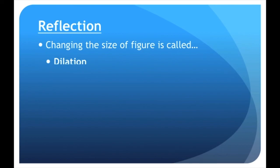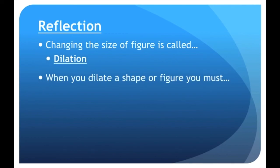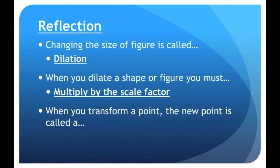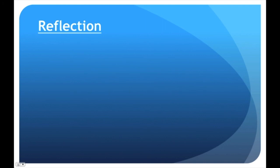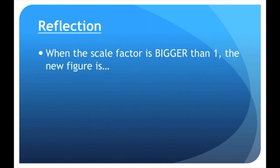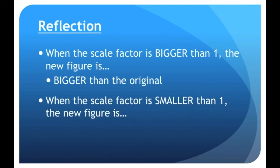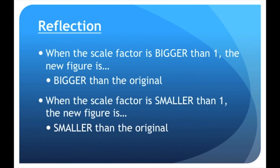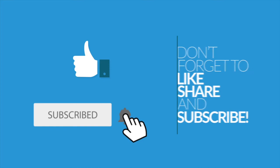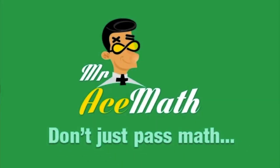Let's go over our key answers. Changing the size of a figure is called dilation. When you dilate a shape, you must multiply by the scale factor. When you transform a point, the new point is called A prime. When the scale factor is bigger than 1, the new figure is bigger than the original — just like when you multiply regular numbers by something greater than 1, you get a bigger answer. When the scale factor is smaller than 1, the new figure is smaller than the original. Thanks for using Mr. Ace Math — don't just pass math, ace it!